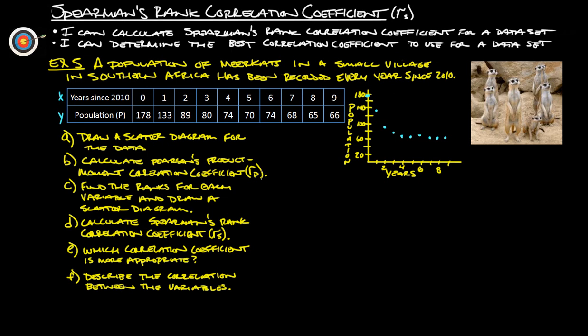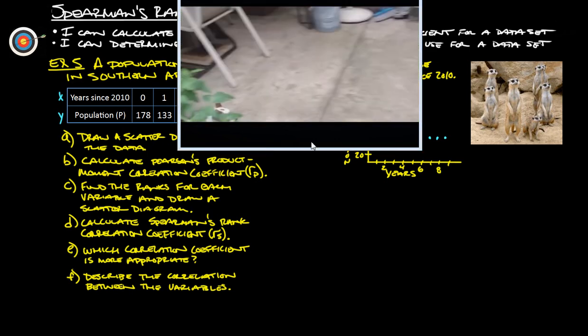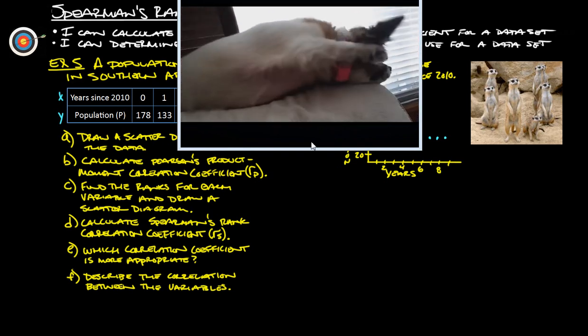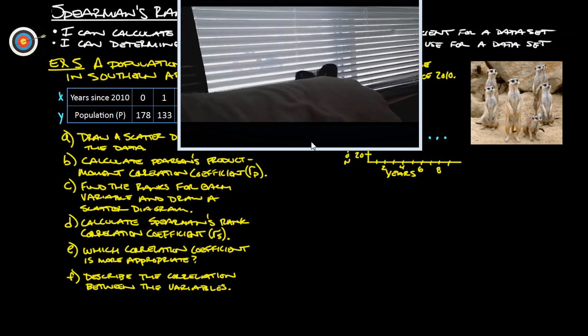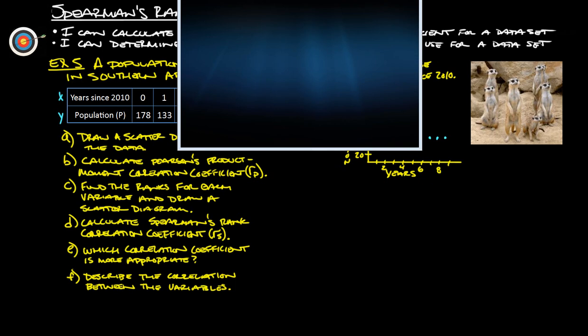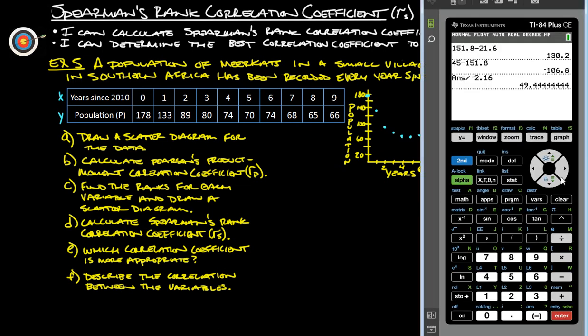Next thing we're going to do is calculate Pearson's product moment correlation coefficient. But first, let's do a quick little comedy break. So calculate Pearson's product moment correlation coefficient. So that is where we're going to want to use our handy-dandy graphing calculator.